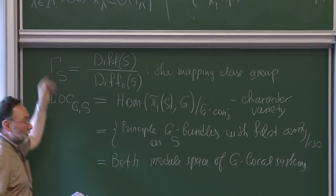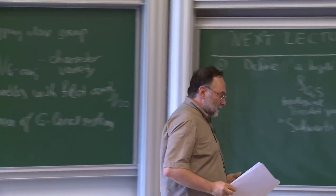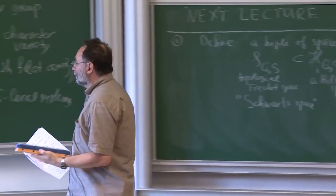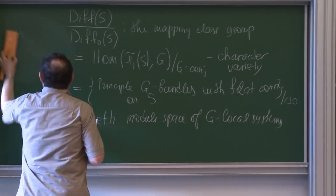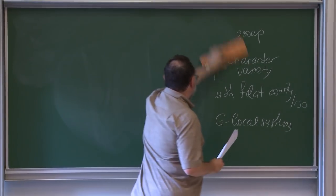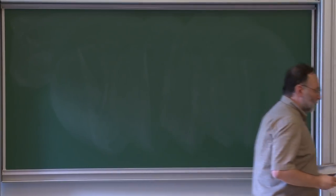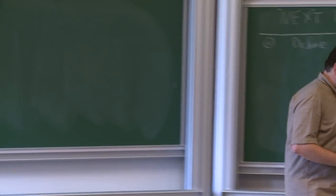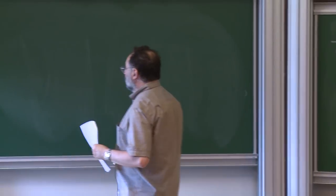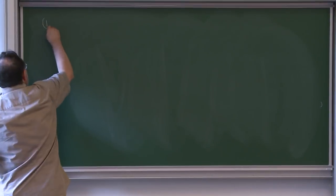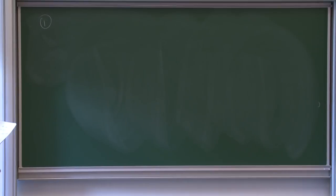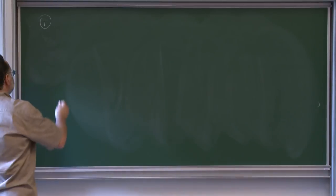We define the Poisson structure: the Poisson bracket between X_lambda and X_mu is given by the pairing (lambda, mu) times X_lambda times X_mu — a quadratic Poisson structure. We want to quantize not just the complex points of this torus but the real positive points. Let's see how this works by following the plan.